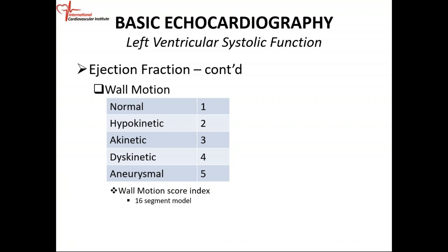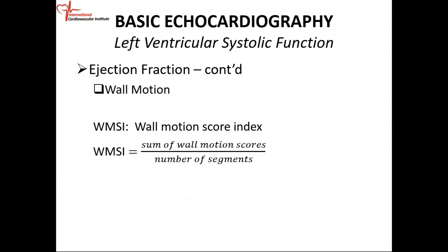For each segment, you're going to look at it and give it a score. The normal wall is going to thicken when it contracts. If it does not thicken to the full extent, we say it's hypokinetic. If it does not thicken at all, we say it's akinetic. And if it moves in the opposite direction — when the heart contracts it's supposed to come in, and if it moves out instead of coming in — then we say that's dyskinetic.